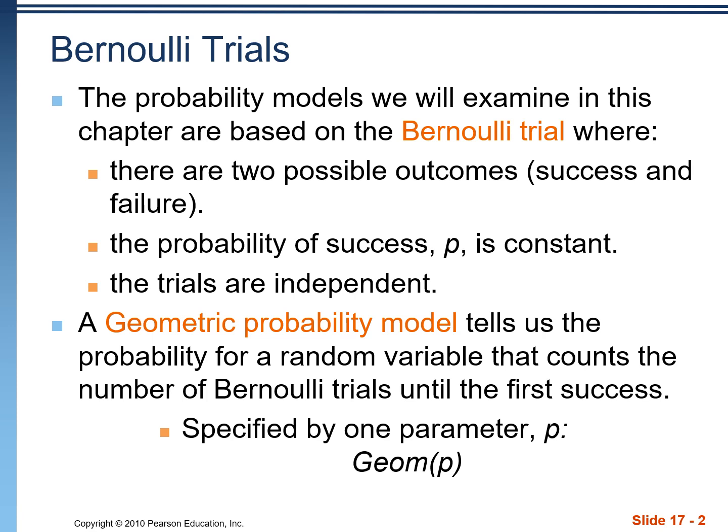There's really two types of Bernoulli trial problems. The first is a geometric probability model. This is a waiting time problem where we're waiting to see how many trials it takes until we reach our first success.